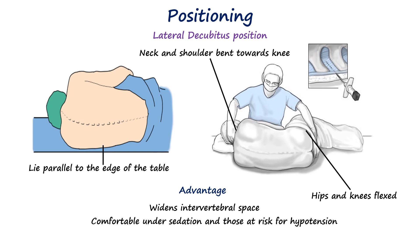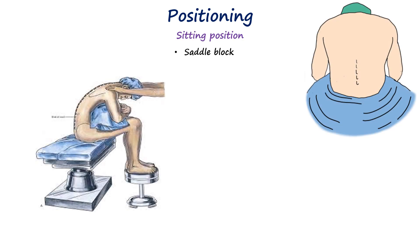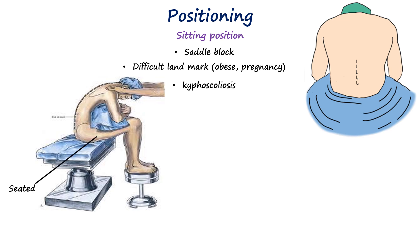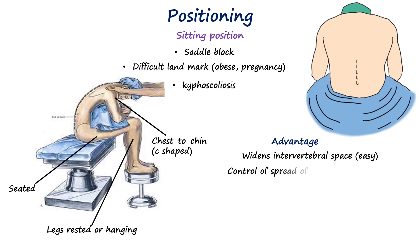The lateral position is good for patients who cannot sit due to conditions like perianal abscess. The sitting position is frequently used for saddle block anesthesia and in obese, pregnant, or kyphoscolytic patients, as it makes anatomical landmarks easier to locate. The patient sits on the edge of the operating table with knees resting on the edge, legs hanging freely with feet supported on a stool, and leans forward, tucking the chin to the chest while hugging a pillow to form a C shape. This helps open the intervertebral spaces and allows easier needle placement, providing good control over the spread of hyperbaric local anesthetic, which being heavier than cerebrospinal fluid, settles under gravity to the dependent areas of the spine.